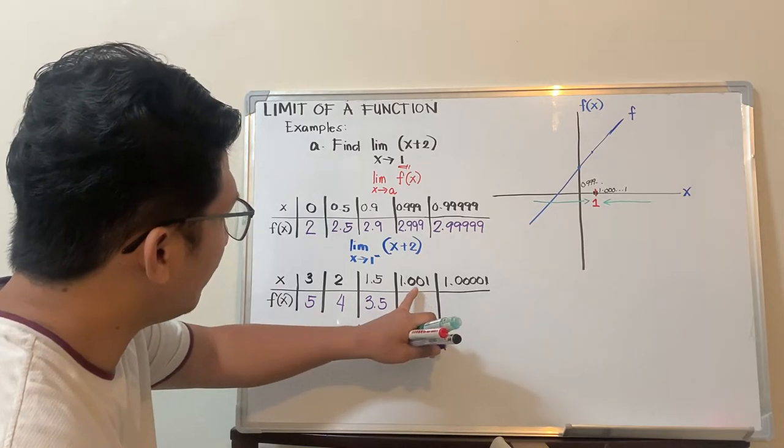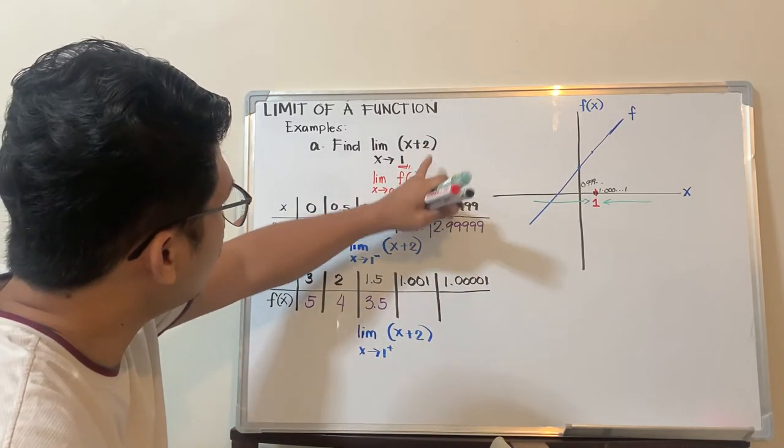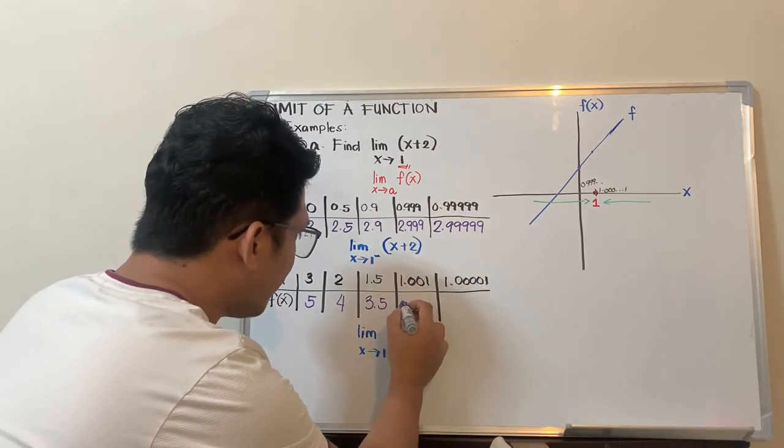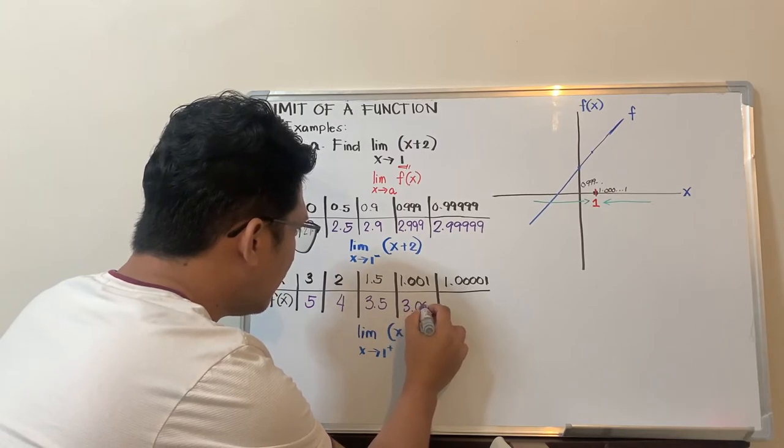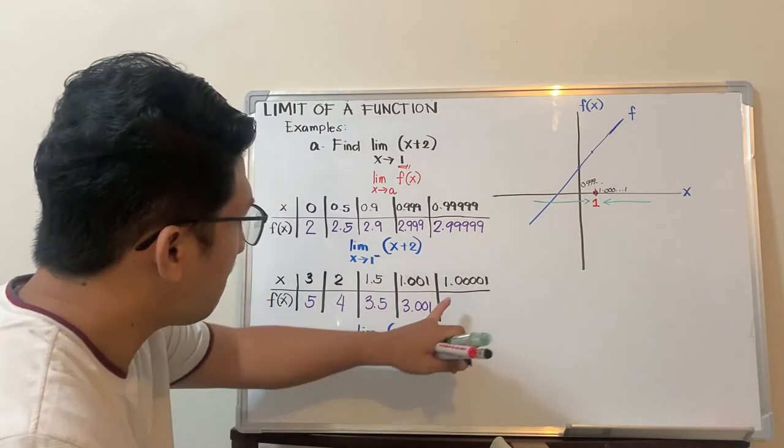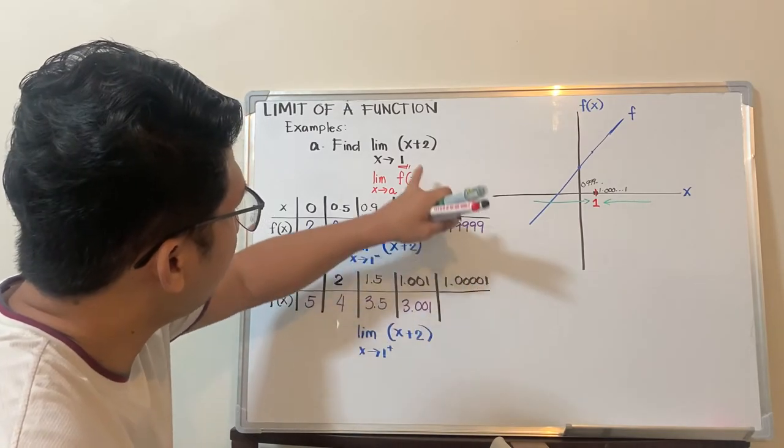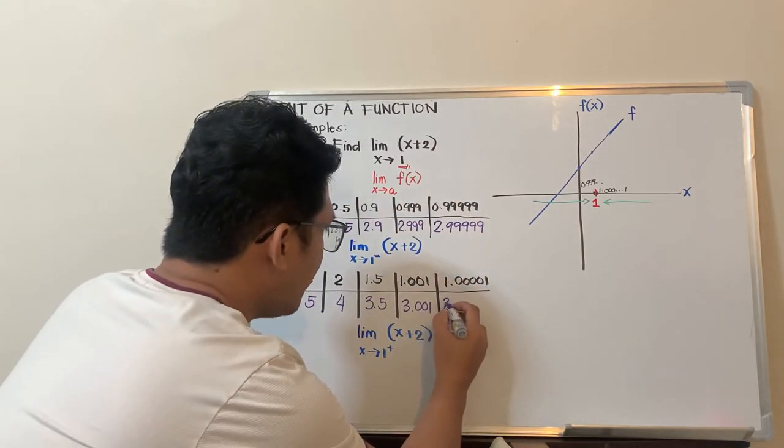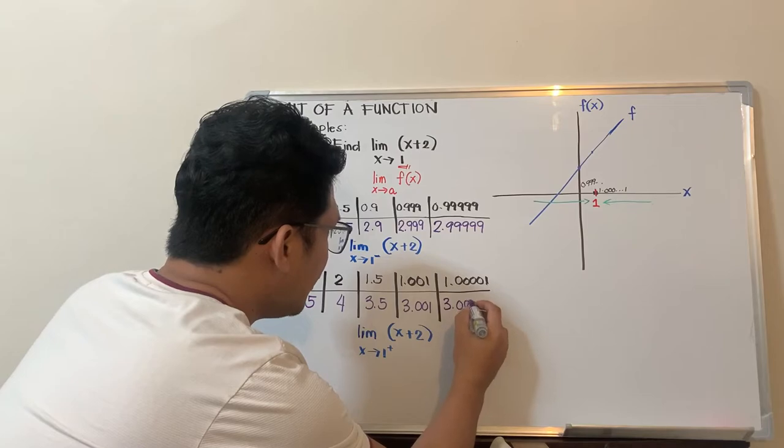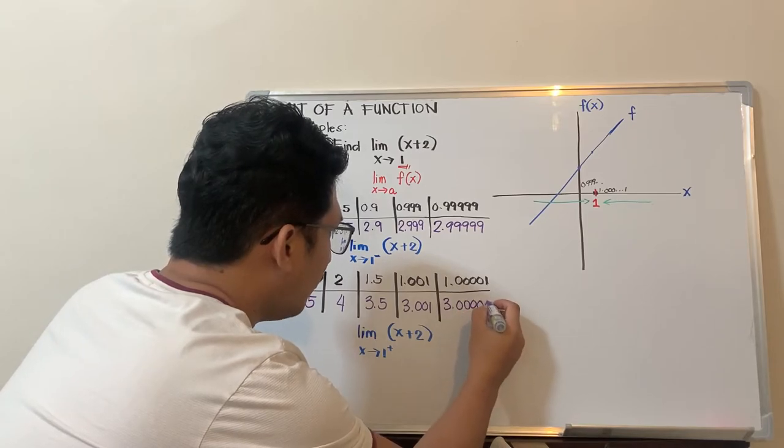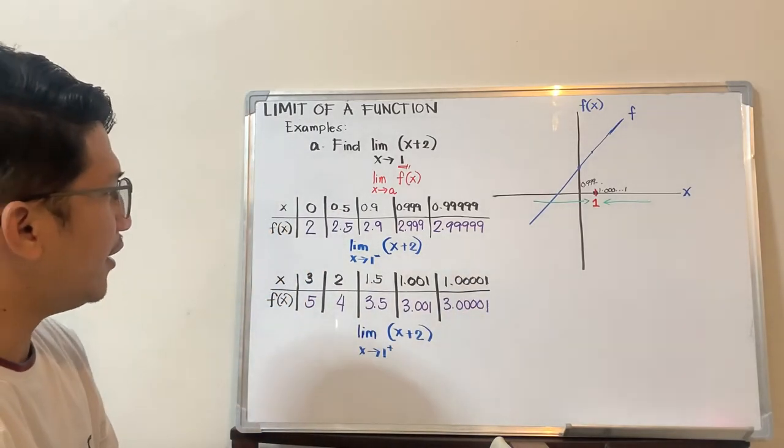1.001 plus 2 is 3.001. And 1.0001 plus 2, that should be 3.0001.